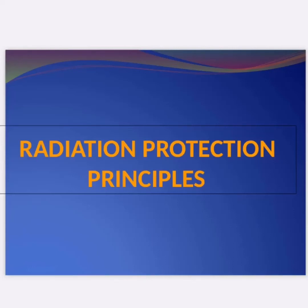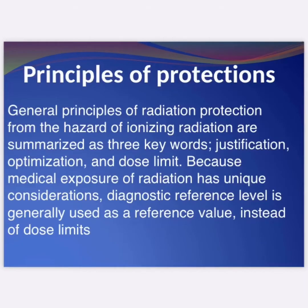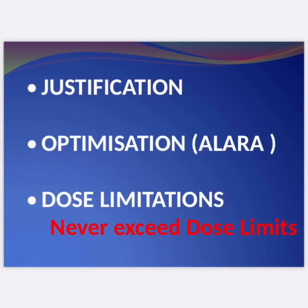Today's topic is about radiation protection principles. General principles of radiation protection from ionizing radiation are summarized by three keywords: justification, optimization, and dose limit. Because medical exposure of radiation has unique considerations, diagnostic reference level is generally used as a reference value instead of dose limits. Justification and optimization allow dose limitations to never exceed the dose limit.